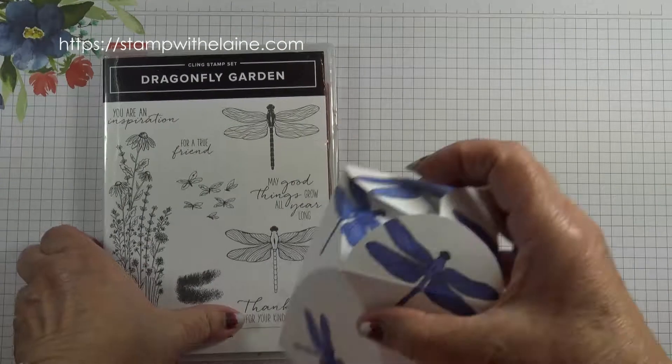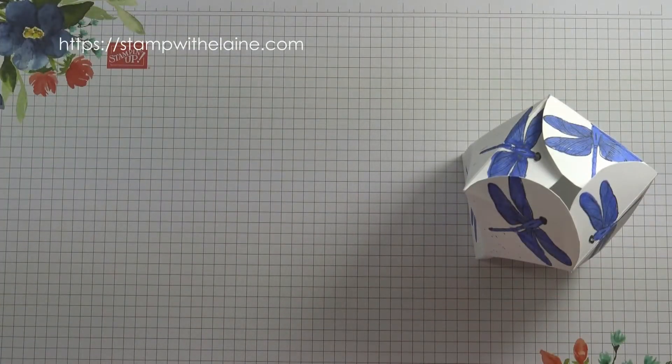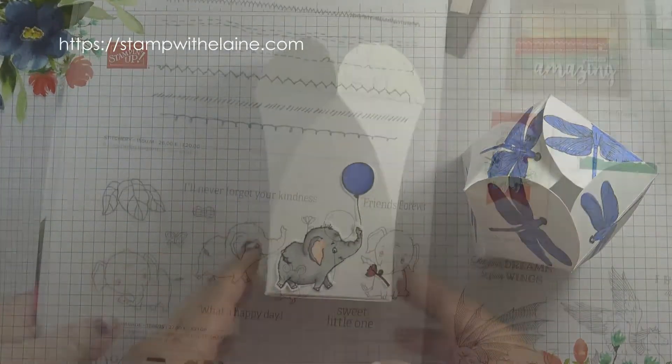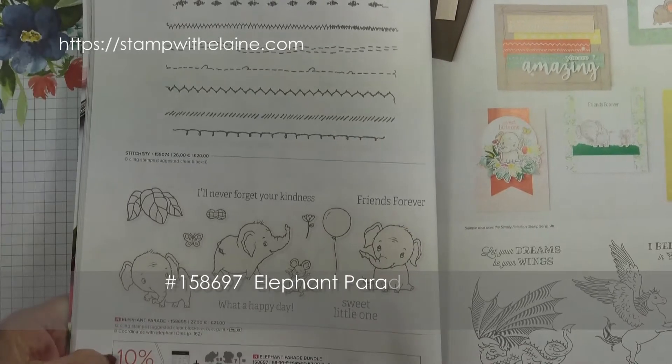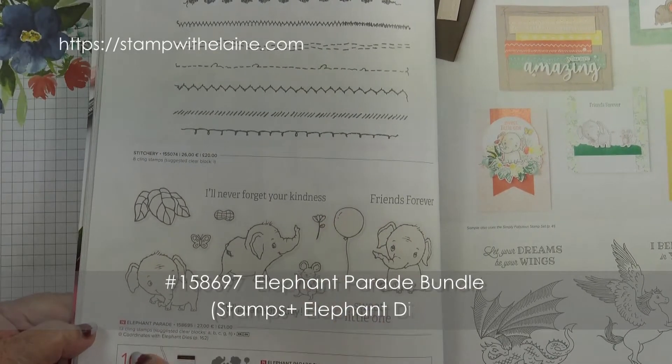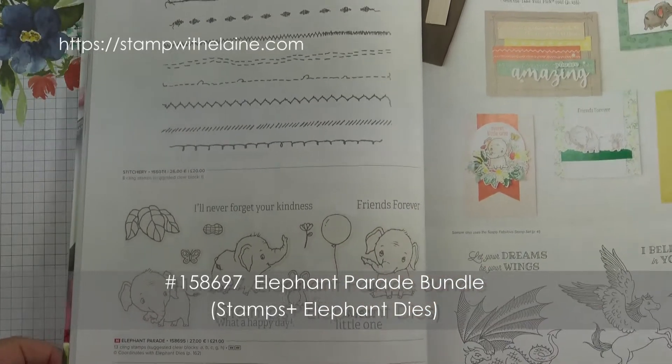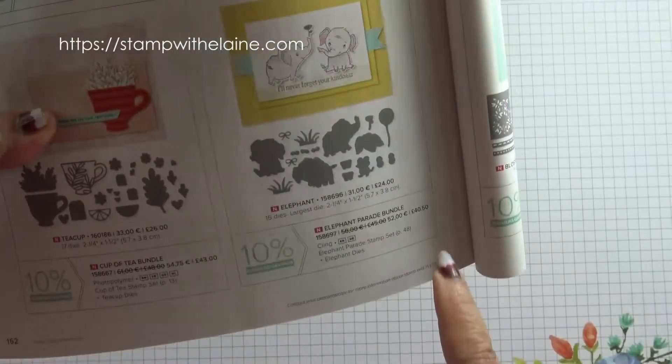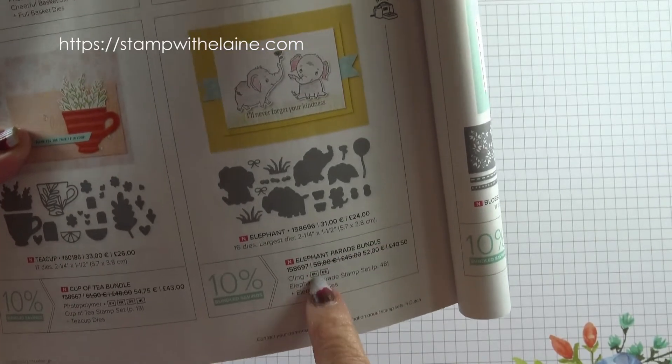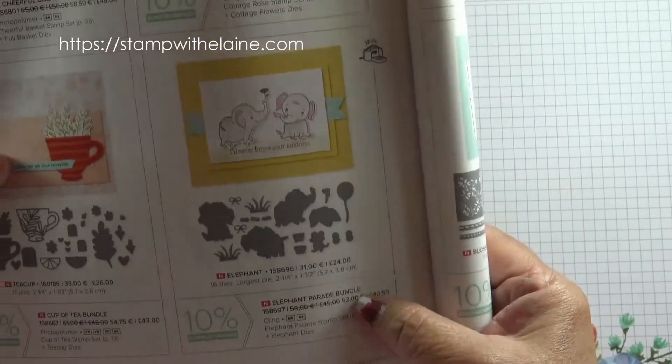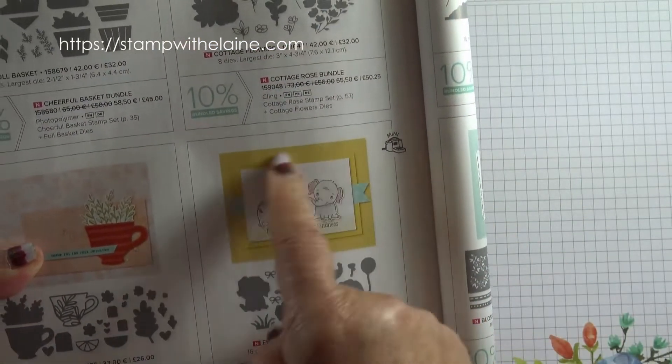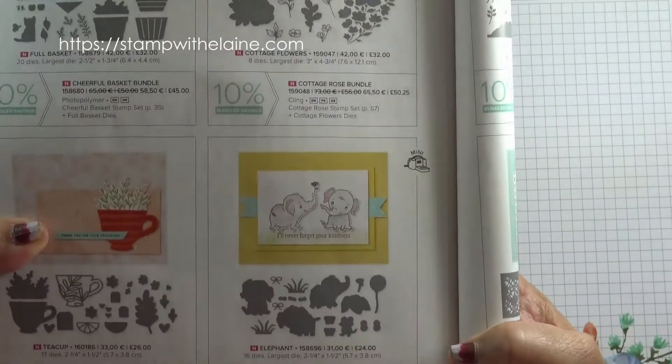So then I made this one which is from the elephant parade bundle on page 48 of the new 2022 to 2023 annual catalog. You can find the dies on page 162, and aren't they just adorable, these little elephants?